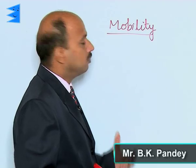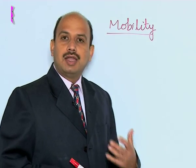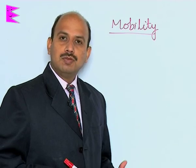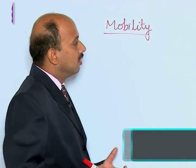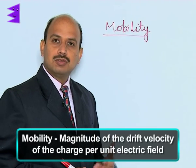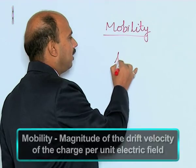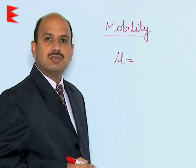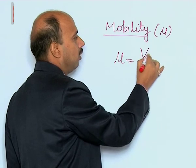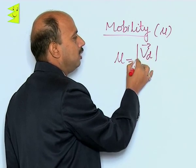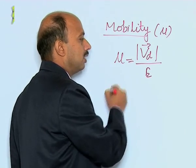Now let us see what mobility is. Mobility of the current carriers responsible for flowing the current is defined as the magnitude of the drift velocity of the charge per unit electric field. We can define mu as the symbol for mobility, so mu is equal to V_d — the magnitude of the drift velocity per unit electric field.